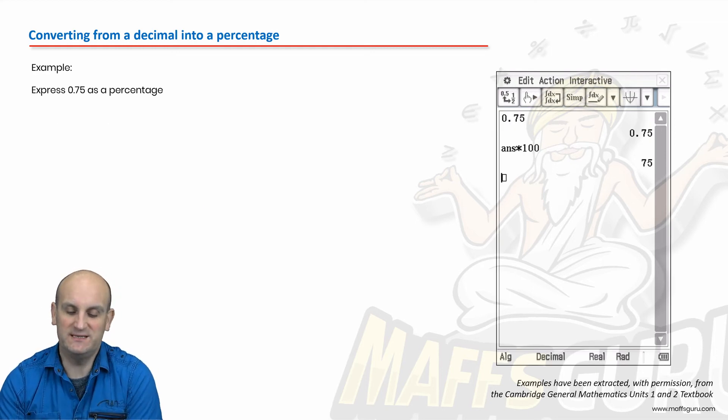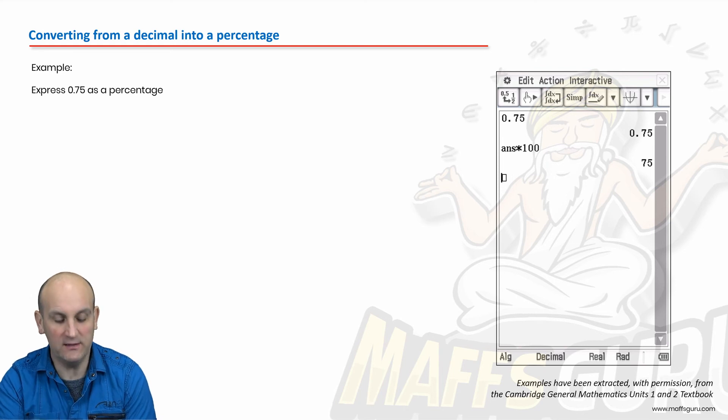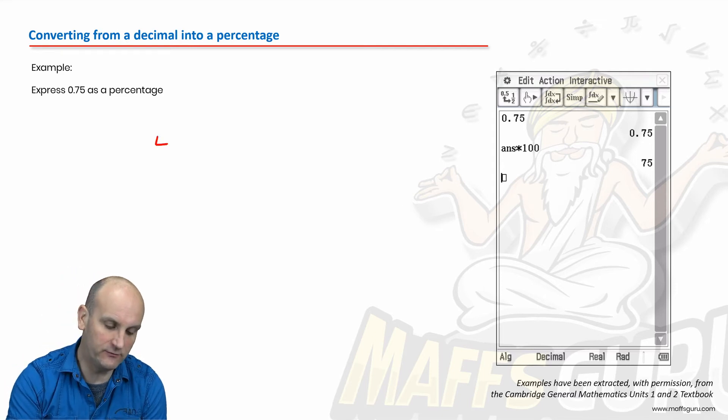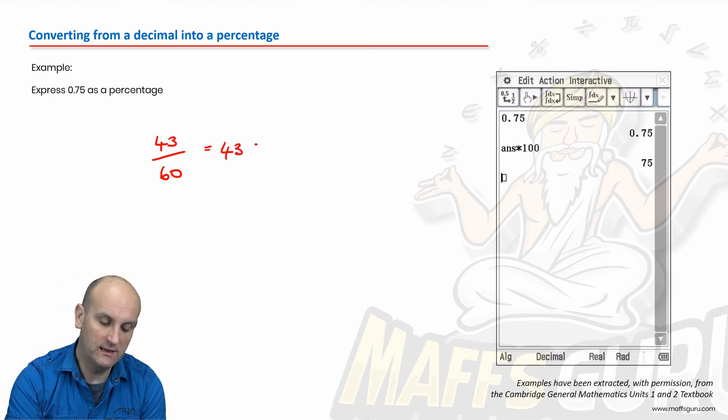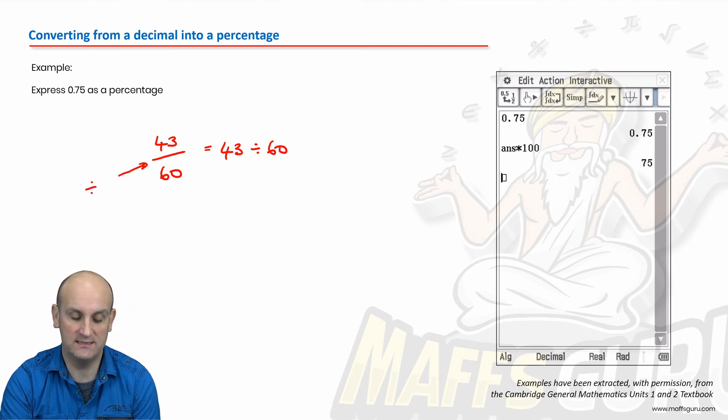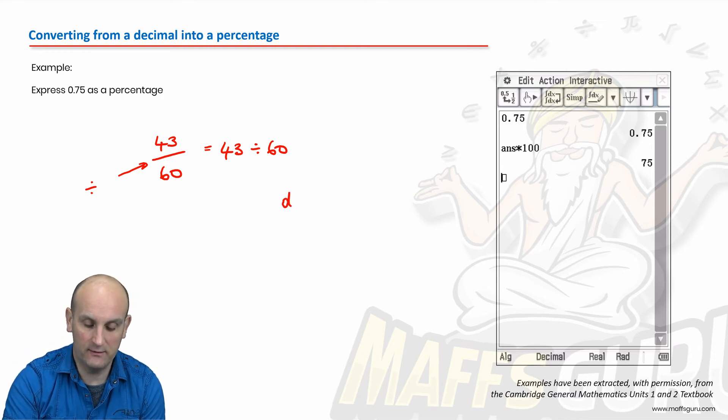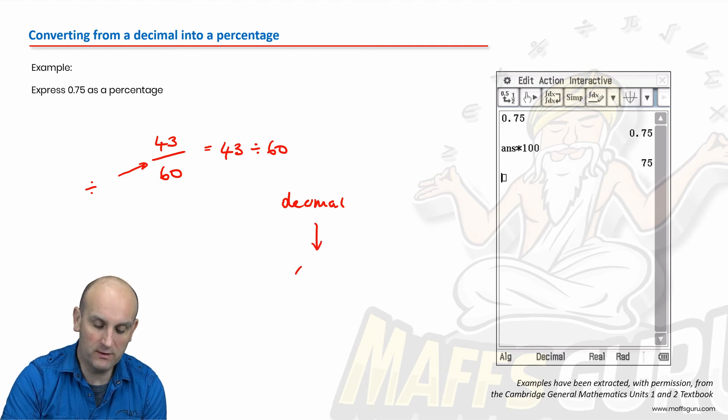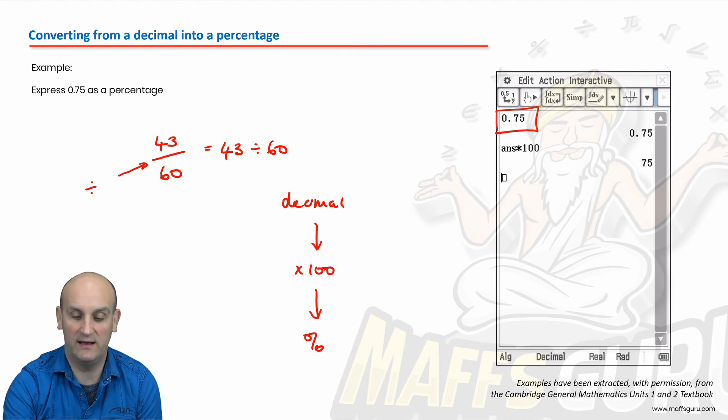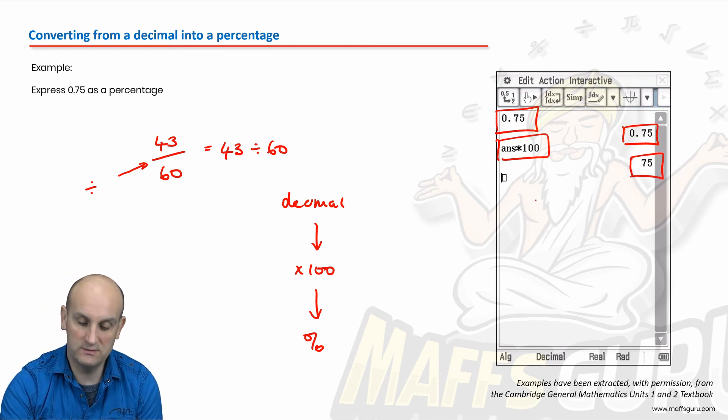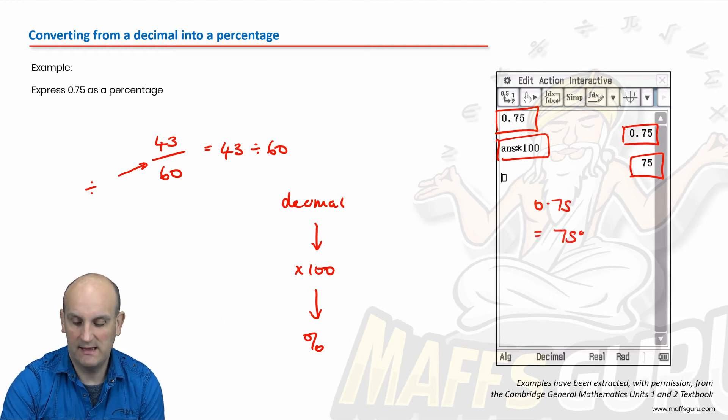What about converting from a decimal into a percentage? Well, we've already done this. If I had 43 out of 60, how would I turn that into a decimal? I'd just do 43 divided by 60. That little line there is a divide sign. So it even tells you 43 divided by 60. That will give me a decimal. And as soon as I've got my decimal value, I multiply that by 100. And that will give me my percentage. So I've just basically put in a decimal value and the calculator has gone, all right, you've got a decimal value. And as soon as I multiply that by 100, I get 75. So 0.75 is the same as 75%.